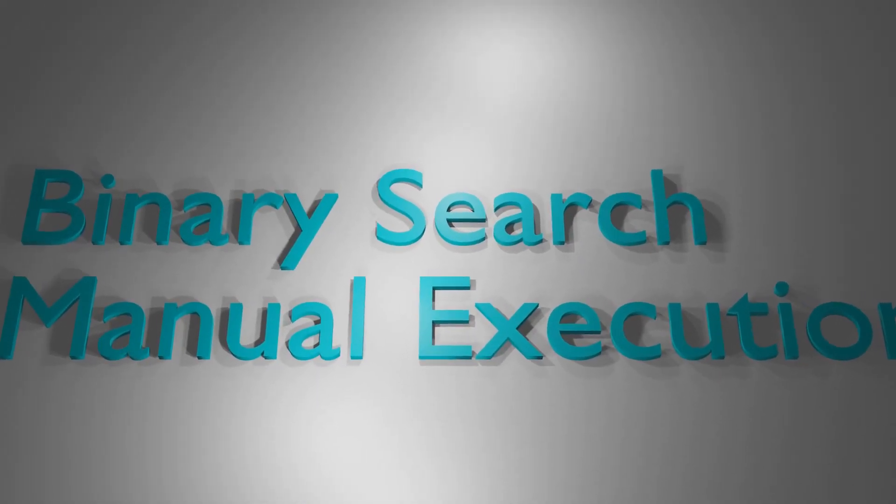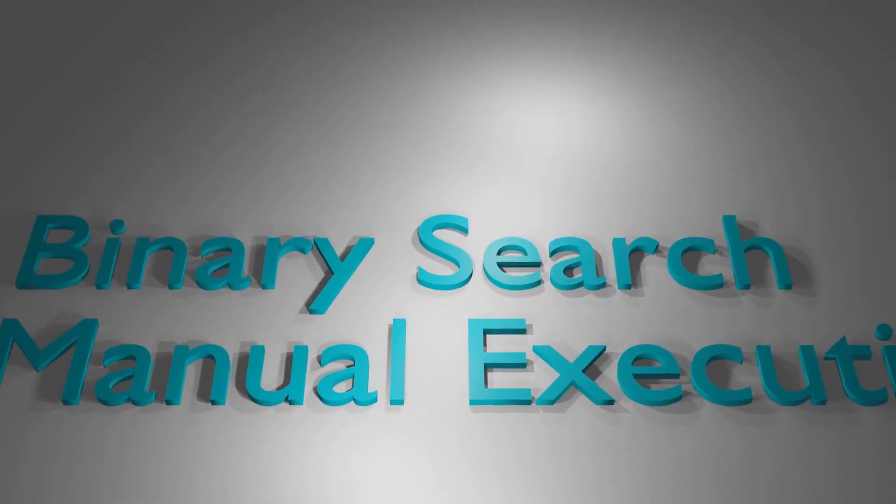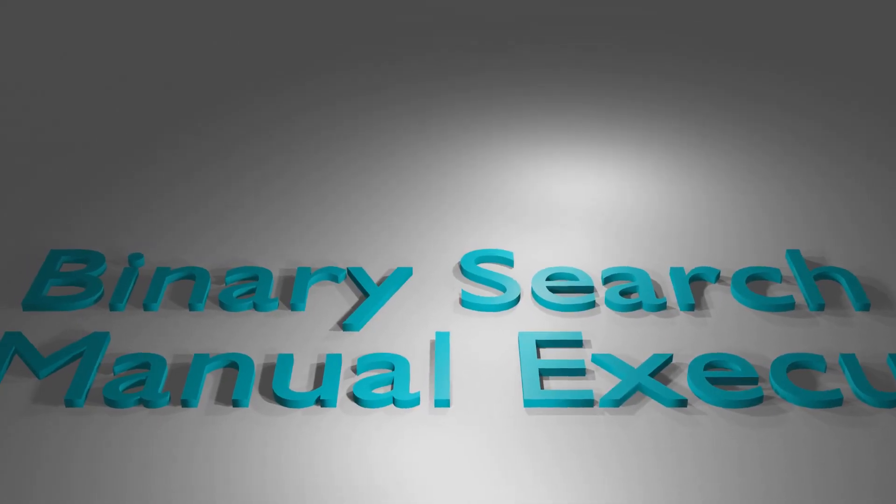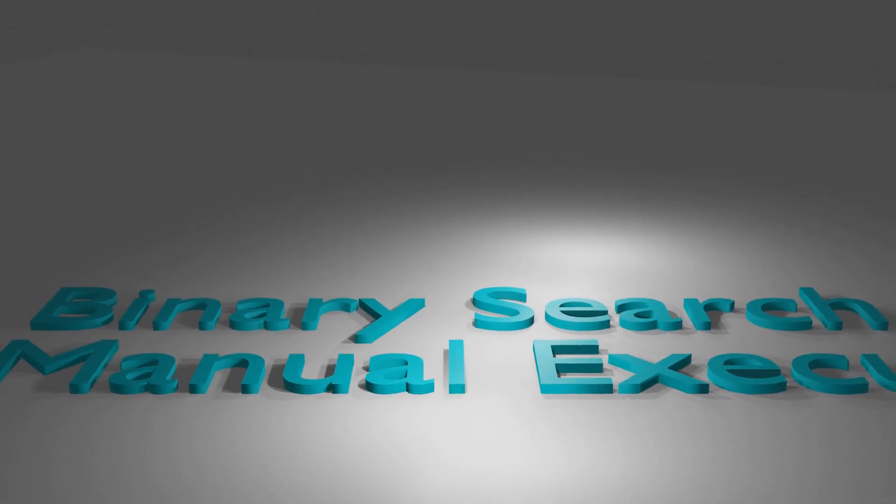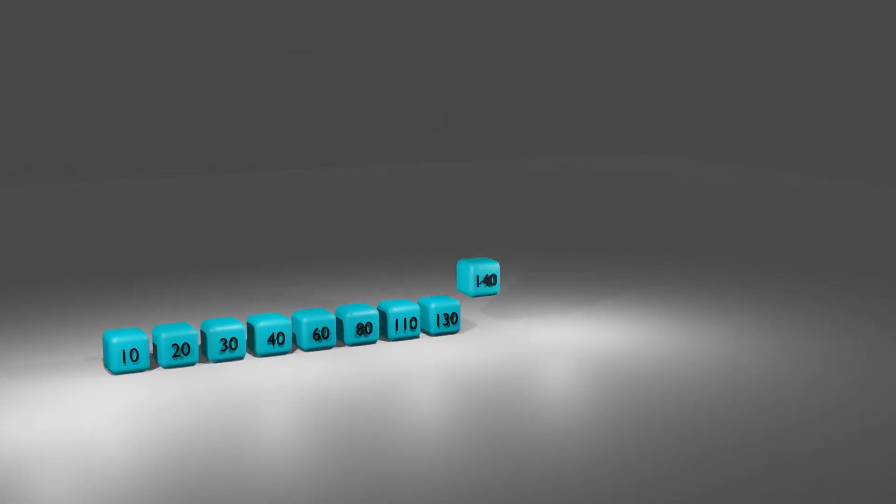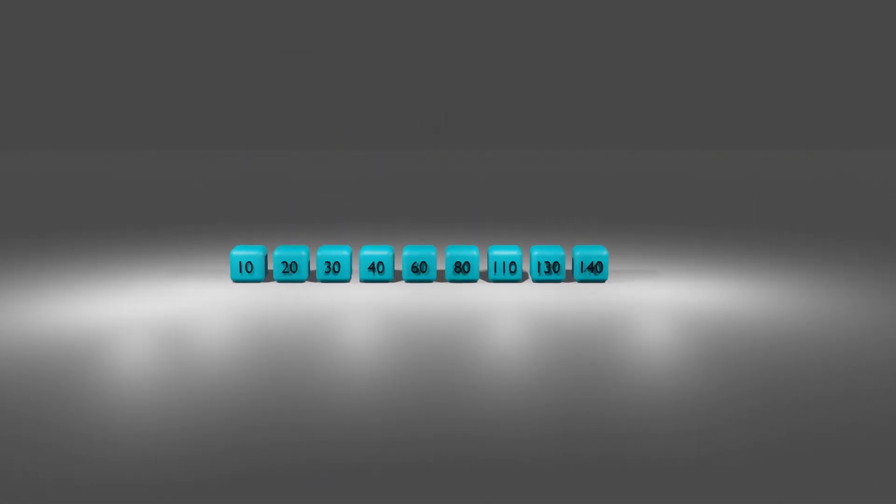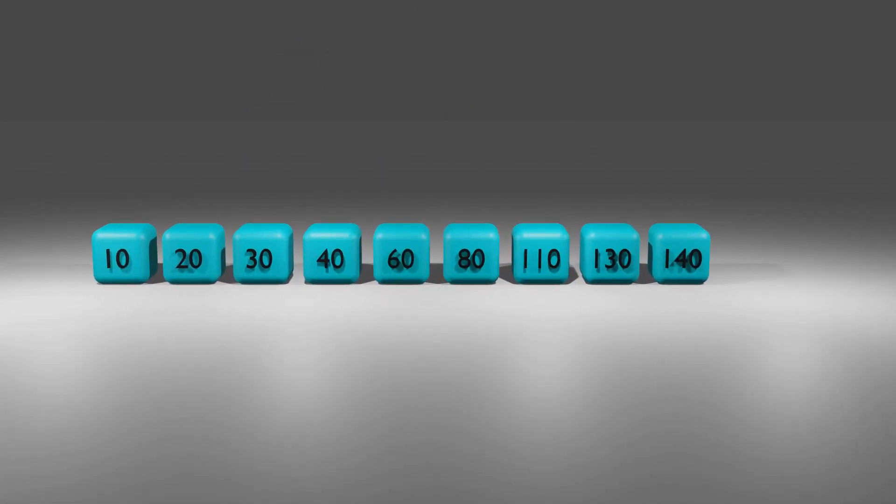To grasp the fundamental concept of binary search, it is essential that we are able to execute it manually before we delve into coding. Let's consider an example of an array of nine elements sorted in descending order, and suppose we want to find the position of the element 40.